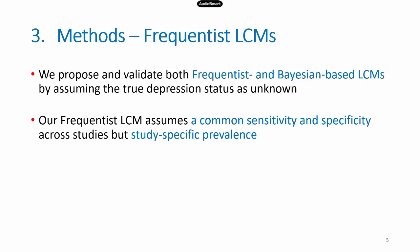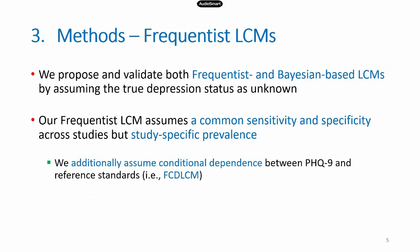In our frequentist approach, we assume that the two tests — meaning the PHQ-9 test and a single reference standard such as the Mini — have a common sensitivity and specificity across studies, but each study has its own prevalence. To describe the expected proportion of test results in each of the four cell frequencies, we assume conditional dependence between the sensitivity of the PHQ-9 and the reference standard test, as well as between their specificities.